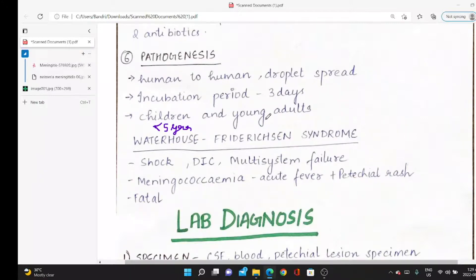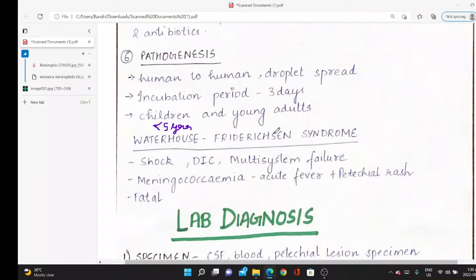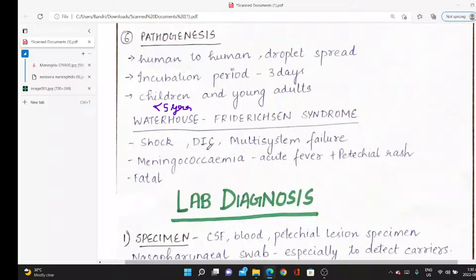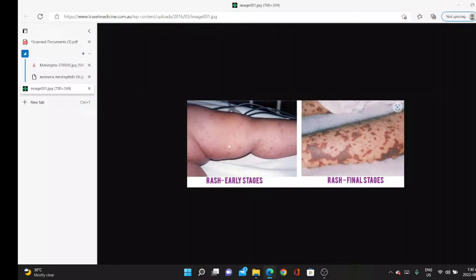There are chances the person will die. The important syndrome related to meningitis is Waterhouse-Friderichsen syndrome: shock, disseminated intravascular coagulation, multi-organ system failure. There's meningococcemia—acute fever, petechial rash, which is also fatal. This is petechial rash: pinpoint, reddish-colored lesions.